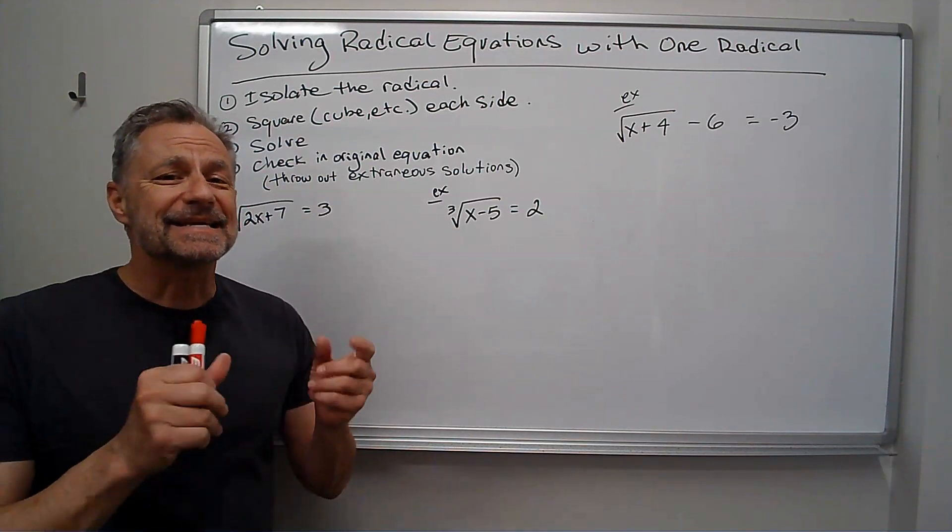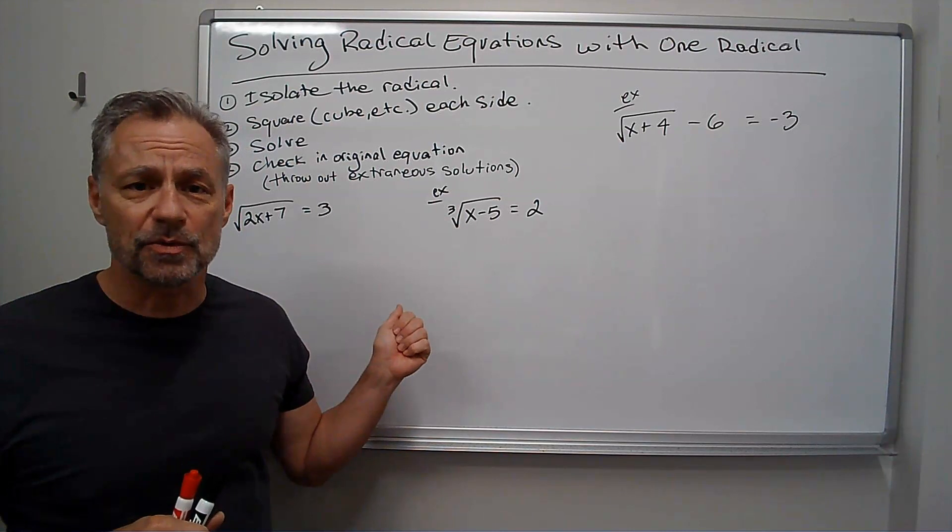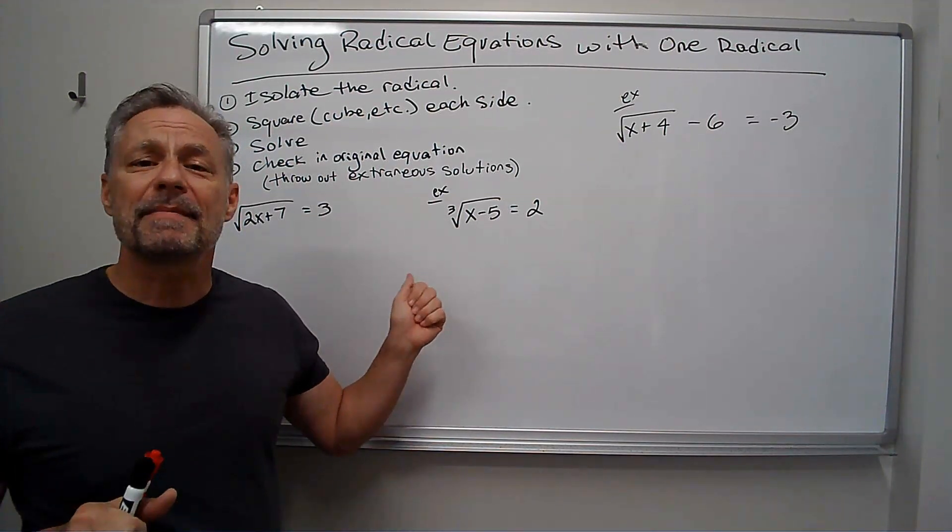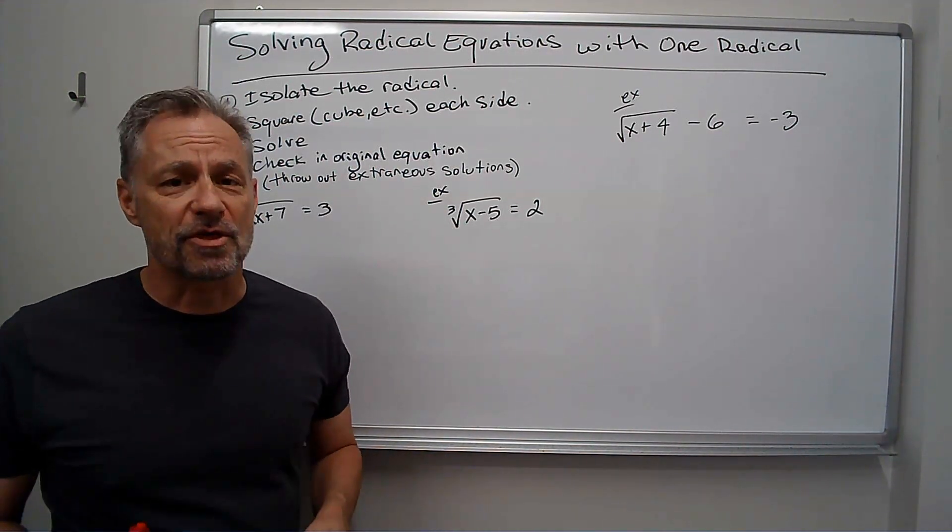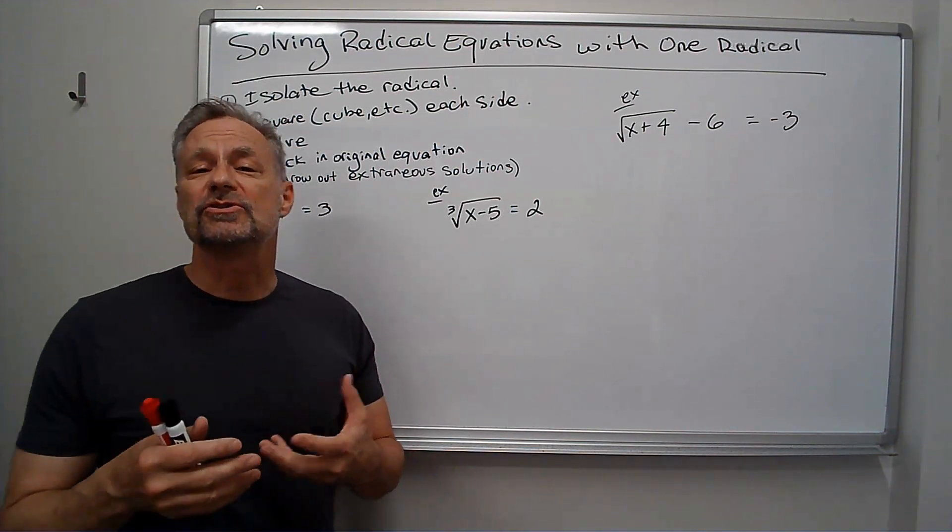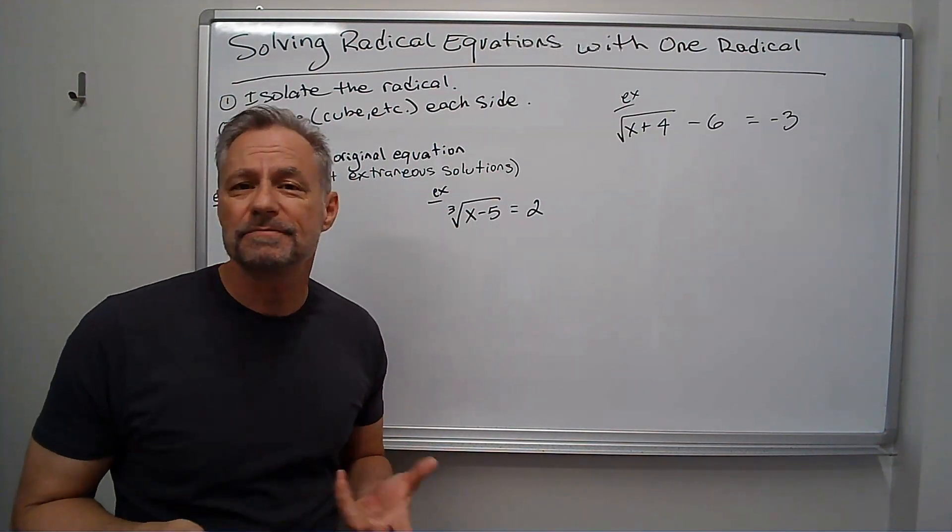But the key to this is, once we've done that, we have to check the solution back in the original equation. Sometimes we'll do everything correct, but when we plug it back in, it doesn't check. It's called an extraneous solution. Any extraneous solutions we have to throw out. If we don't get any solutions that work, then no solution would be our answer. But let's look at a few problems.